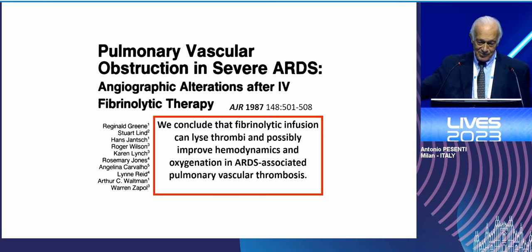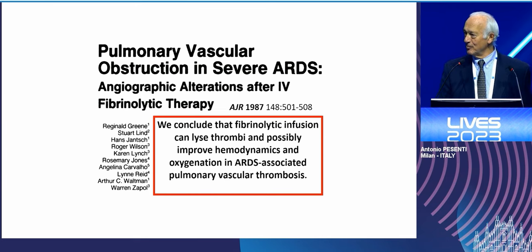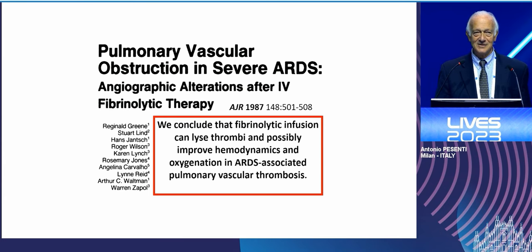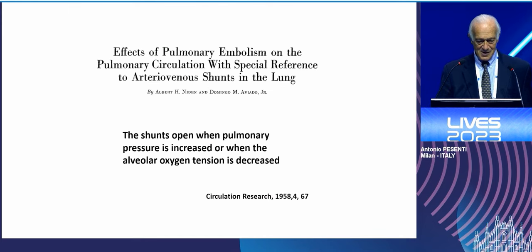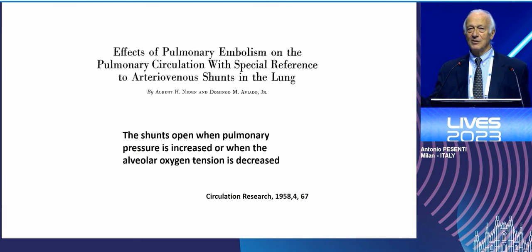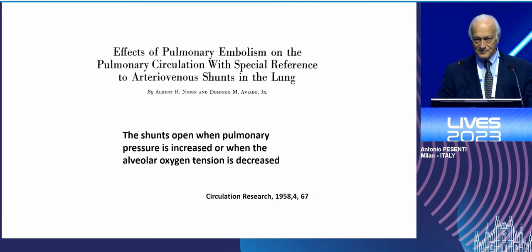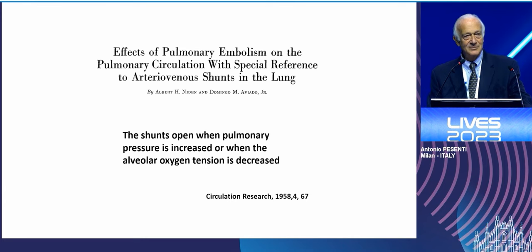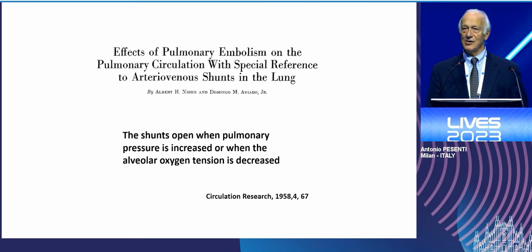Somebody has even used fibrinolytics to decrease the pulmonary artery pressure — it's not been done very often, but it has been done — and the effect is that pulmonary artery pressure goes down. The increase in pulmonary artery pressure contributes to opening normally silent intrapulmonary shunts, which in turn further decrease oxygenation.